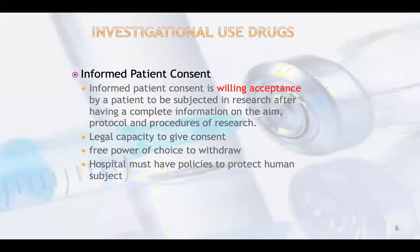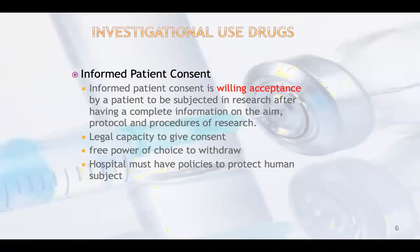Before going to investigate, the committee has to first get acceptance from the subject and obtain patient consent — whether he is willing to accept these drugs as an investigational drug or not. The subject must be willing to be a research subject after having complete information on the aim, protocol, and procedure of research, and must have legal capacity to give consent. They must inform the patient that he is a subject for this investigational drug. If he says yes, then they apply the medicine on that subject. The patient also has the power of choice to withdraw — at any time the patient can withdraw from the project. There must also be policies to protect human subjects.